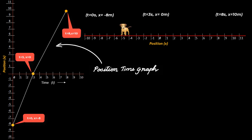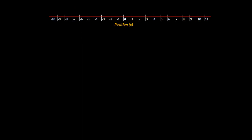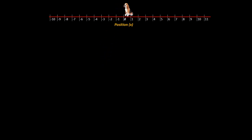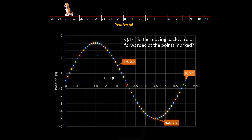Let us do a problem to help us understand position-time graphs better. Another hungry dog named Tic Tac went back and forward on a straight line in search of a bone. The position-time graph looks like this, and we are asked at each of the marked points whether Tic Tac was moving backward or forward.